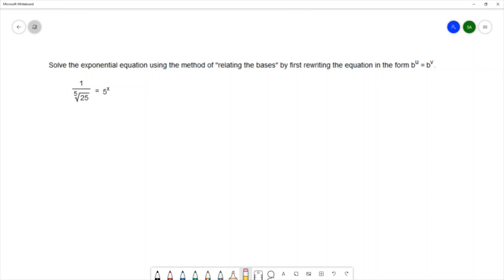I'm looking at the value inside my radical, which is 25, and the value in the base on the right, which is 5. 25 can be written as 5 squared, and on the right we already have a base of 5, so I'm going to use 5 as my base.